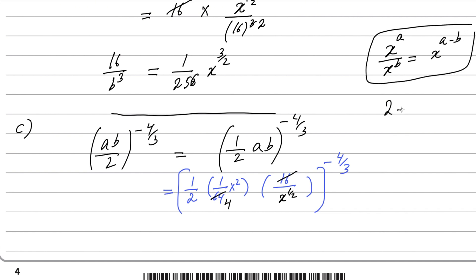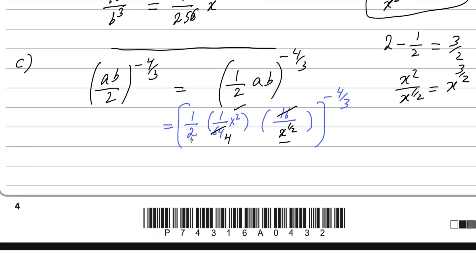So subtracting 2 minus 1 over 2 gives 3 over 2. x squared divided by x^(1/2) gives x^(3/2). Multiplying the 2 with the 4 gives 8 in the denominator, so we have (1/8 × x^(3/2)) to the power minus 4 over 3.